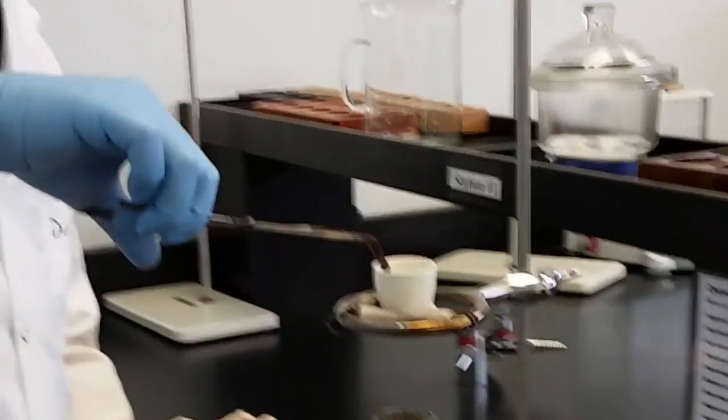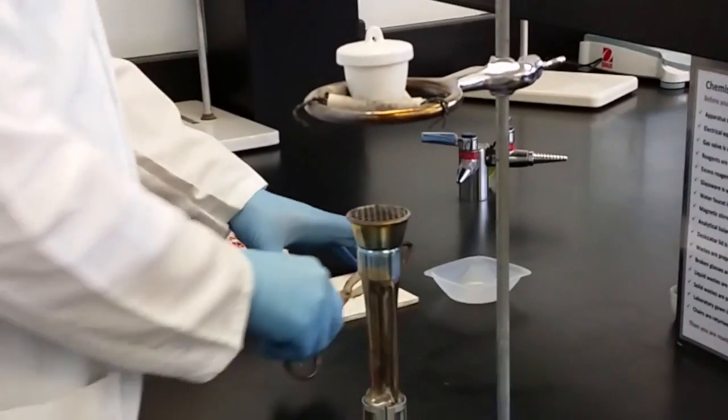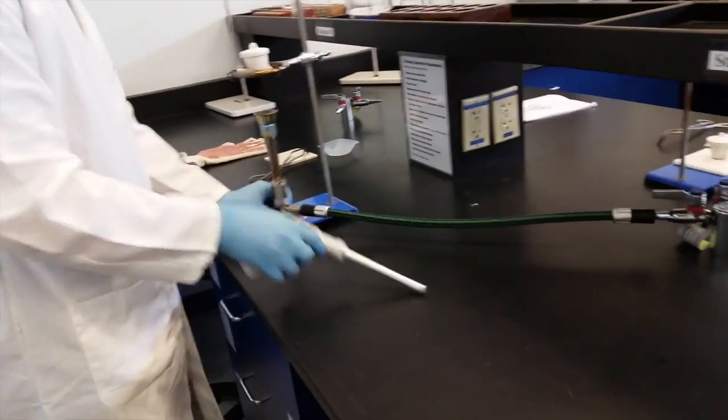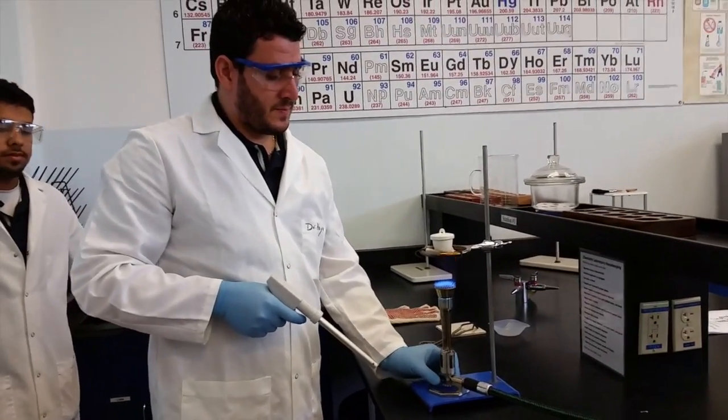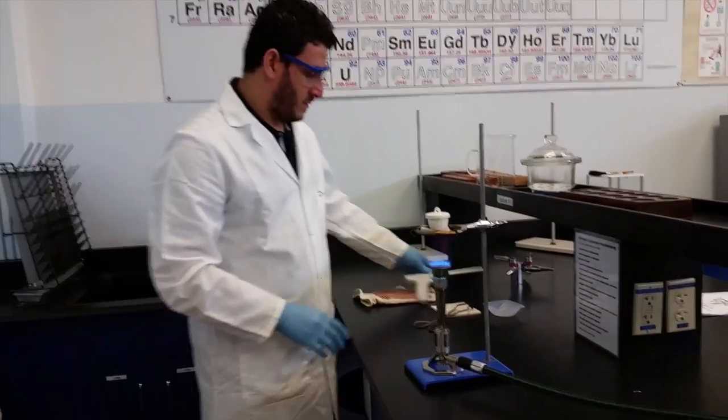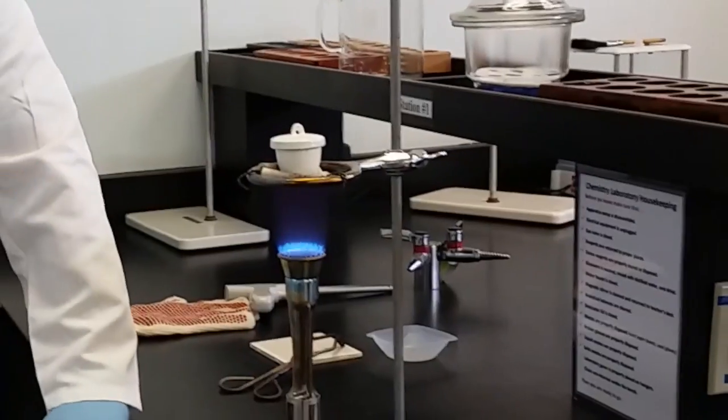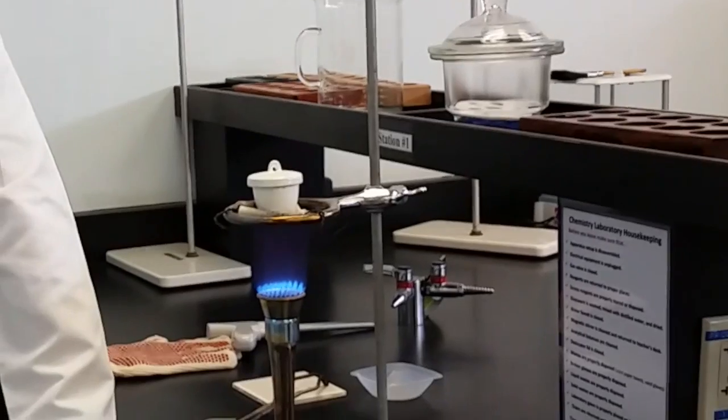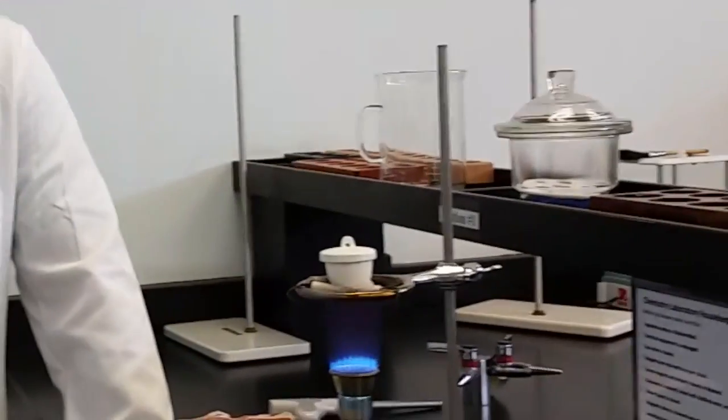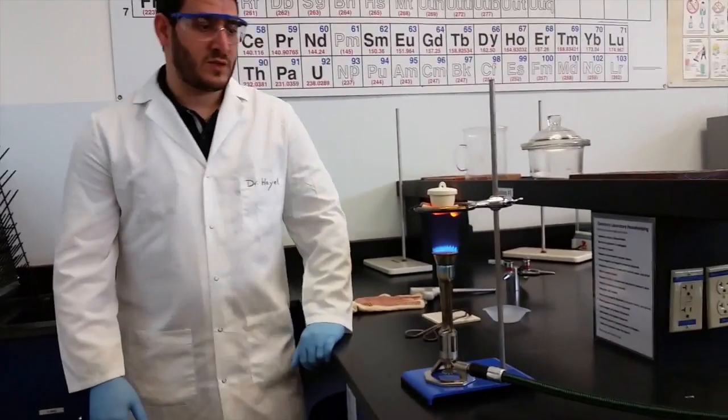I will take my crucible with the solid, put it on the triangle plate, cover it, and start the burner. If you keep looking at the bottom of the crucible, the bottom should get red. Once it gets red, after that you need to wait 20 to 25 minutes.